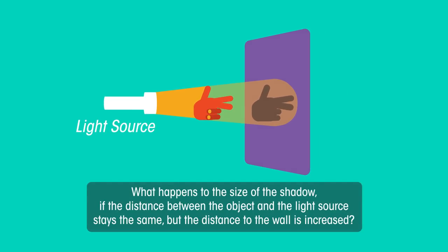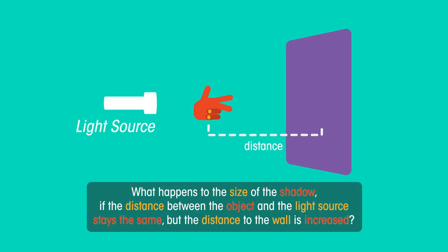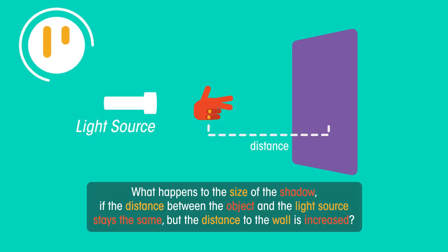What do you think happens to the size of the shadow if the distance between the object and the light source stays the same but the distance to the wall is increased? Pause the video and have a think.